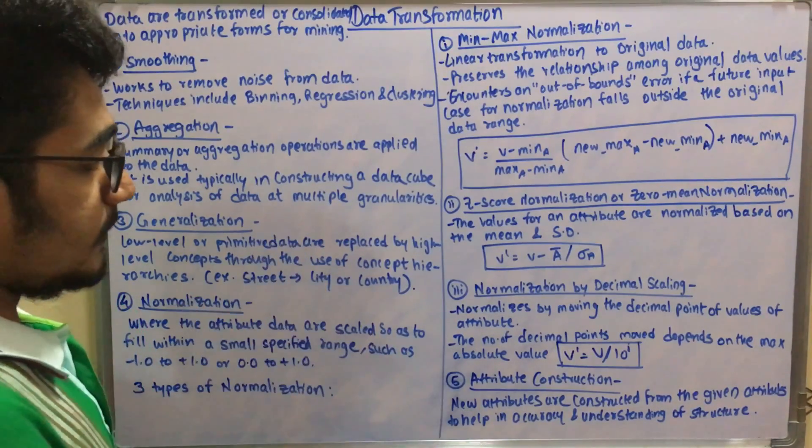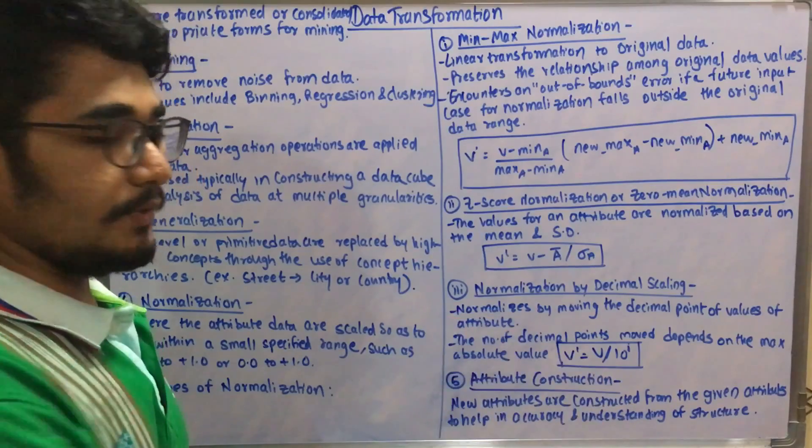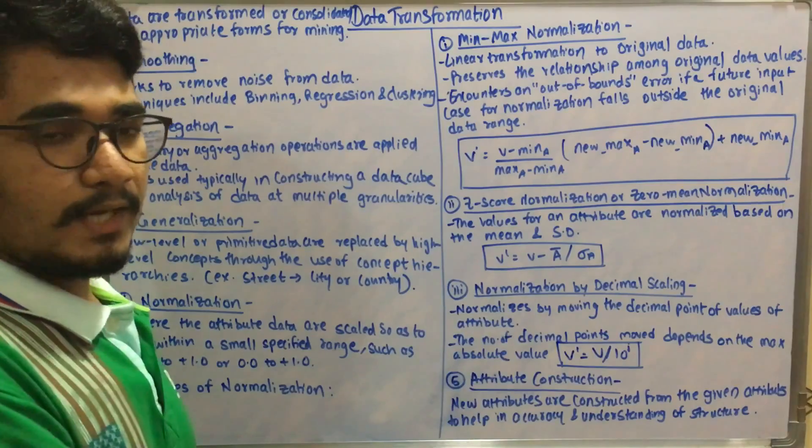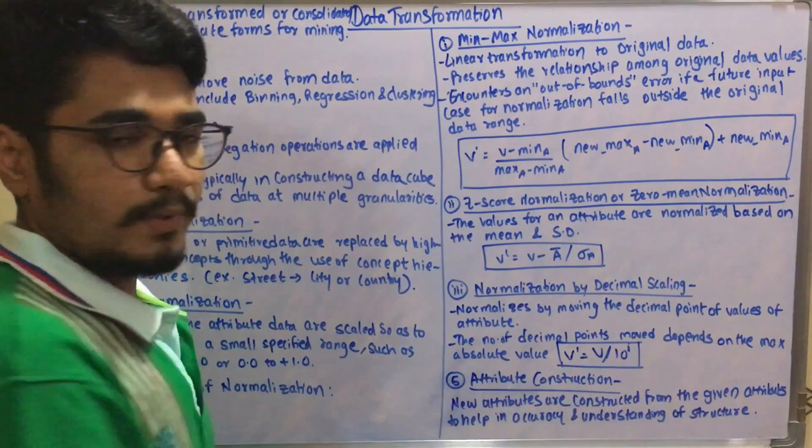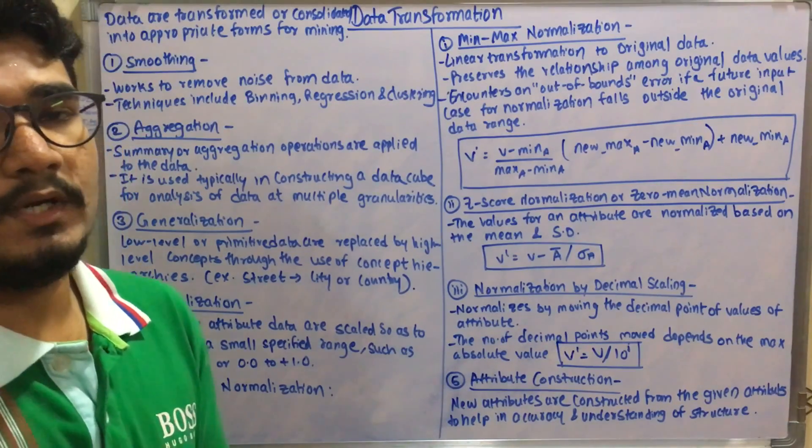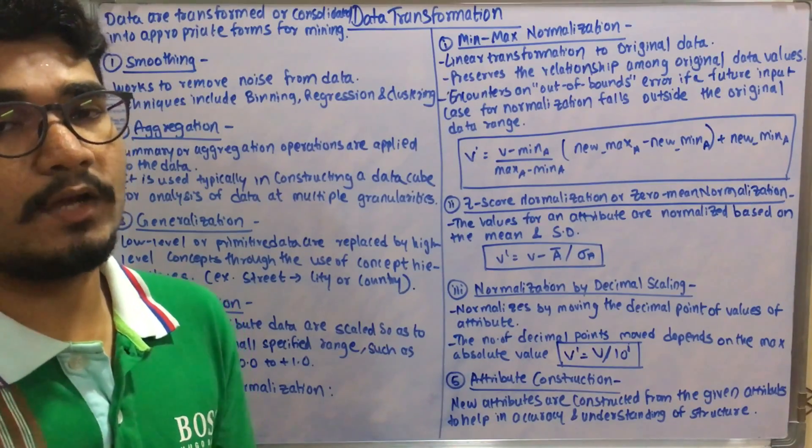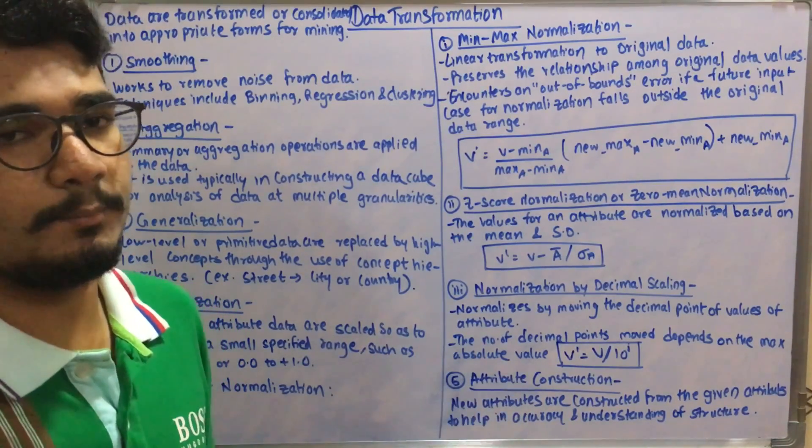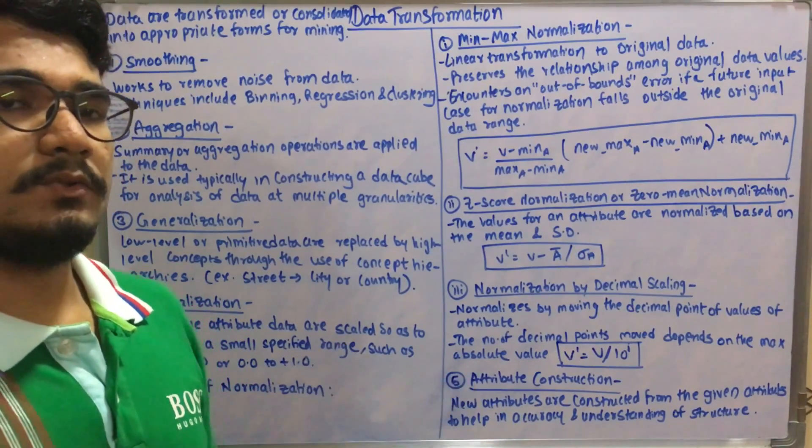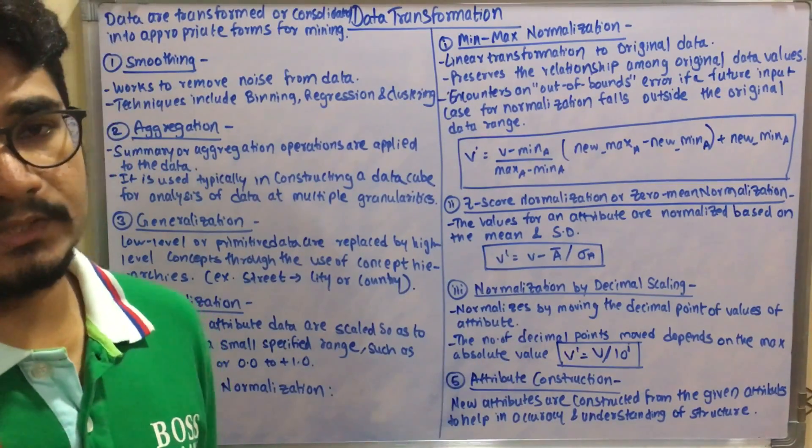Next you have the final data transformation technique: attribute construction. In this, new attributes are constructed from the original or given attributes to help in understanding the accuracy or to summarize the structure in a more representational way. For example, you have the area and the width, so with that you calculate the height of a rectangle or some other geometrical measures. You can correlate with any other kind of data you may have.